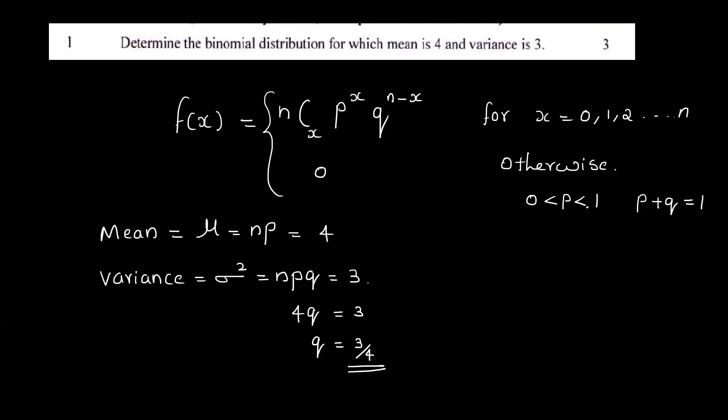It is not possible. There is no chance possible. If you want to add q, what is p? That is 1 minus 3 by 4. That is equal to 1 by 4.